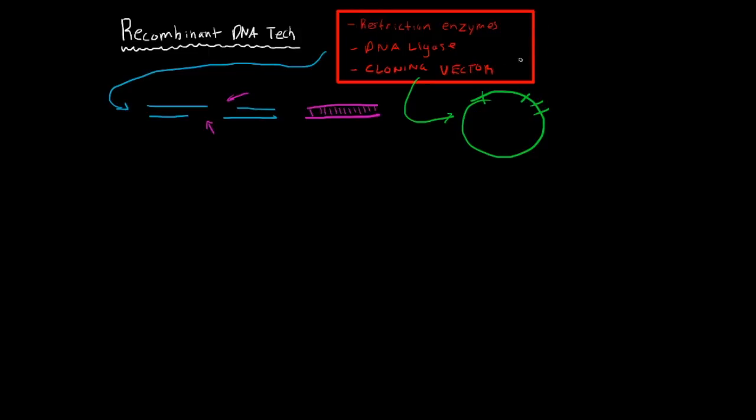There are plasmids, there are bacteriophages, cosmids, Ti plasmids, shuttle vectors, there's a bunch of different cloning vectors that scientists are able to use. A lot of these aren't usually used as cloning vectors, like Ti plasmids and P elements and DNA viruses like the SV40.